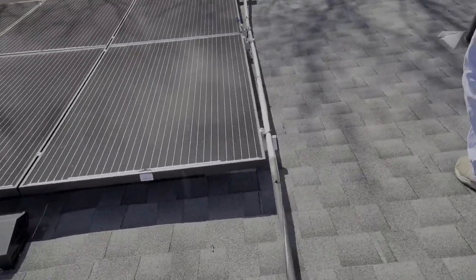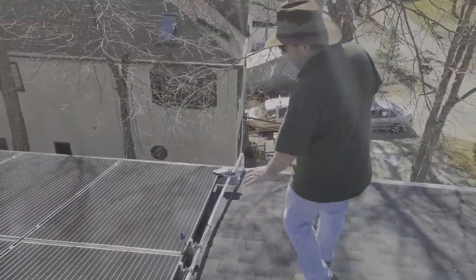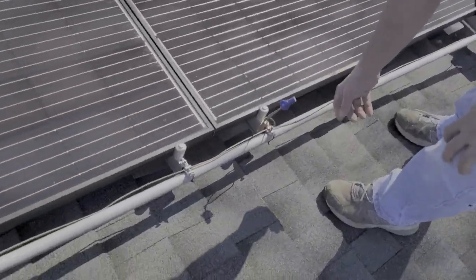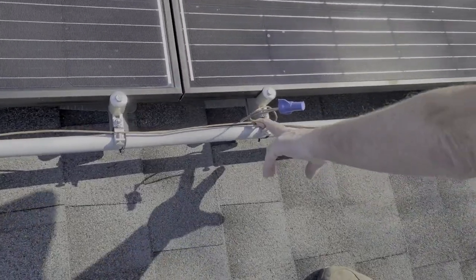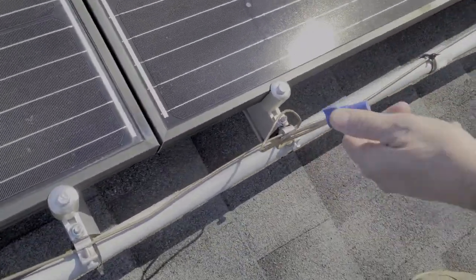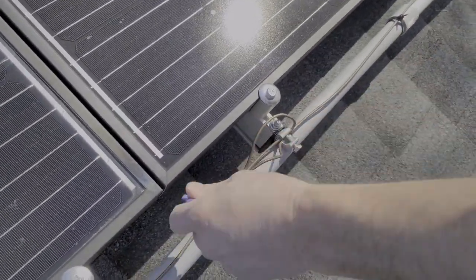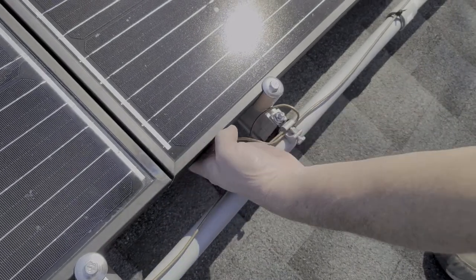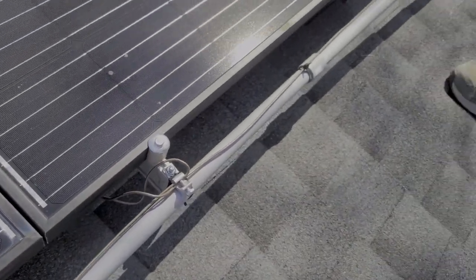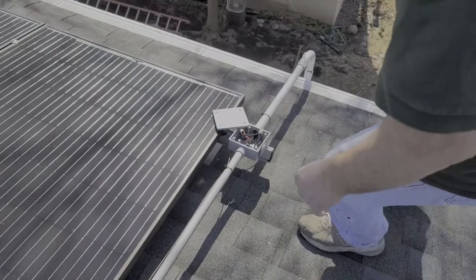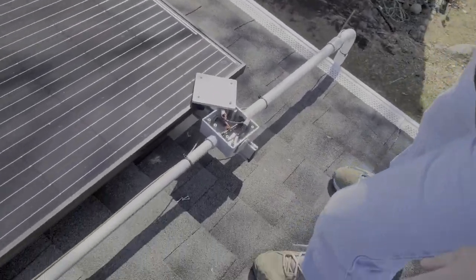Now as we follow the conduit we come down and realize that my ground wasn't long enough. So what I did was I ran the ground through each way and then wire nutted it together. I stuck this guy out of the way and we keep going with the ground. Now I run that ground all the way down to the combiner box and we'll see that in a minute.